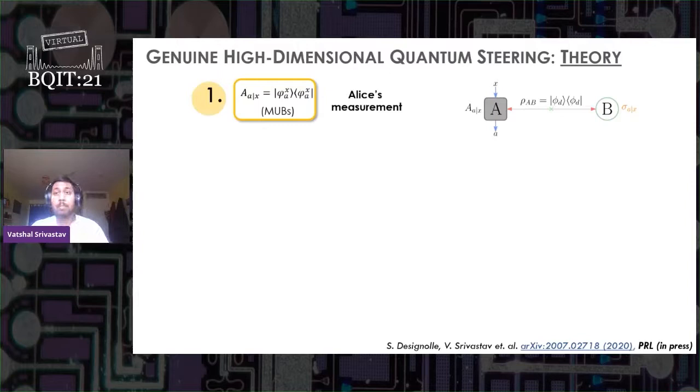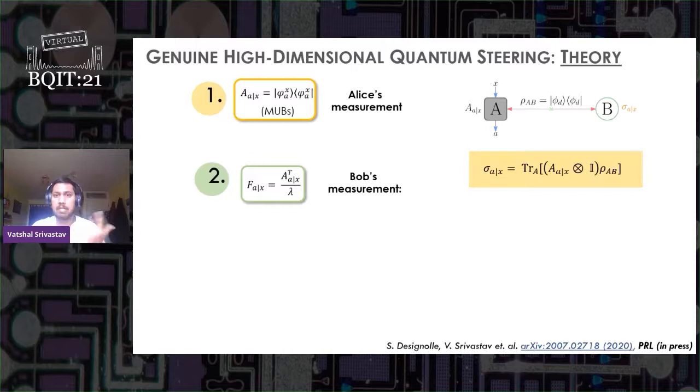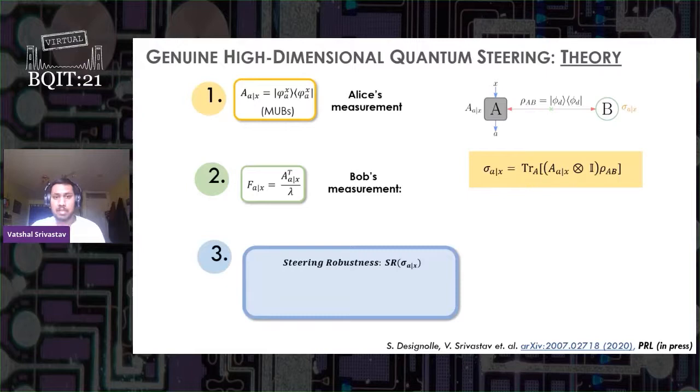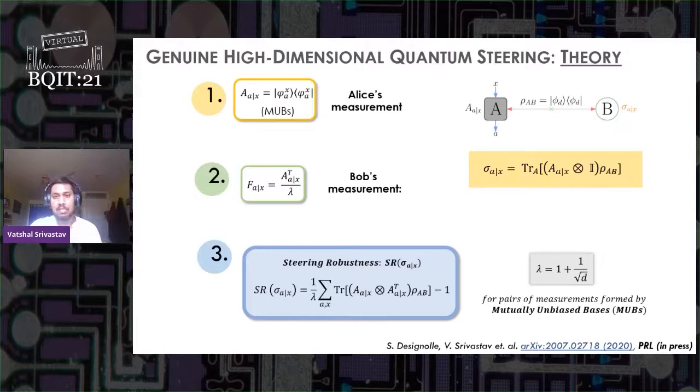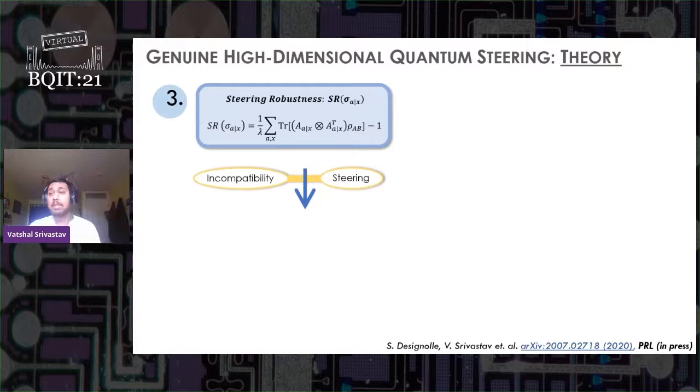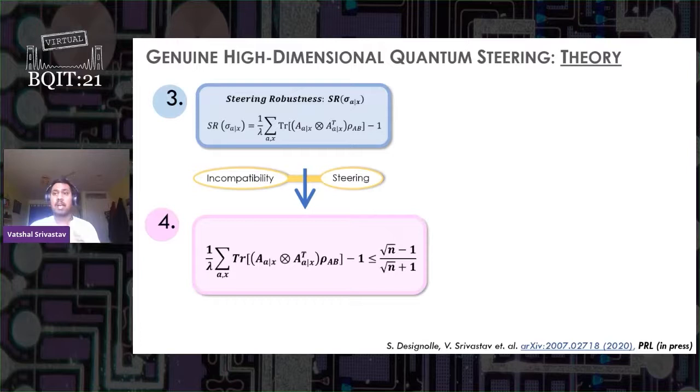If Alice chooses a measurement to be a projector formed by a mutually unbiased basis, or a MUB, giving the assemblage sigma ax, and Bob's measurement would be a transpose of Alice's measurement divided by some constant lambda, we can calculate a quantity known as steering robustness. The steering robustness quantifies the strength of steering in a bipartite system. Here the value of lambda is valid only for a pair of MUB measurements in d-dimensional case.